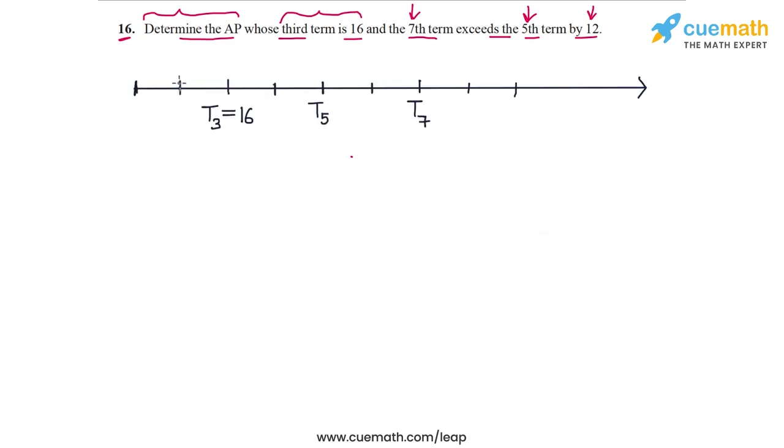Here's a visual model for this information. This number line representation—the markers on this line represent the terms of the AP. For example, this marker represents the third term, which is 16, and we have the fifth term here and the seventh term here. We are told that the difference between the fifth and the seventh term is 12, so the seventh term is 12 more than the fifth term.